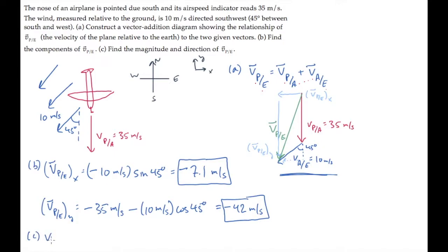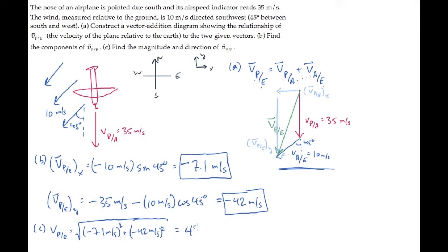Part C asks us for the magnitude and direction of this same vector. To find the magnitude, we use the Pythagorean theorem. Take the square root of the sum of the squares of the components. You calculate that and find it equals 43 meters per second. Let's call the direction of this vector theta.